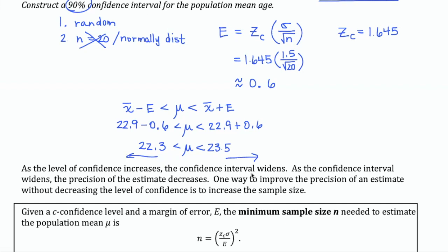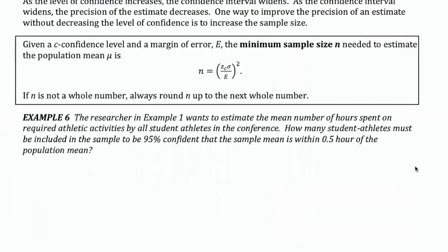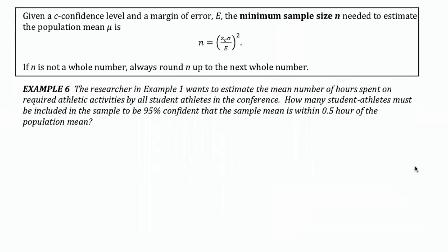But as that confidence interval widens, the overall precision of the estimate decreases. If I move these two numbers far apart — say, to 18 and 27 — I have less certainty as to what my actual mean is going to be. One way to counteract this without backing off to a lower confidence level is to increase the sample size. Anytime you use a larger sample, you will get more accuracy. So if you're designing a survey, you can plan for this in advance — if you know what confidence level and margin of error you want, you can determine the minimum sample size needed.